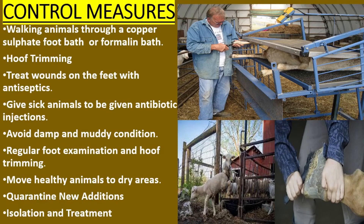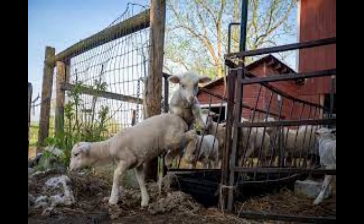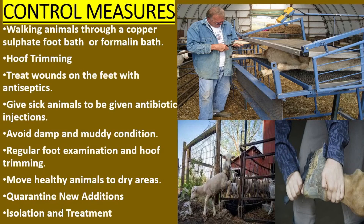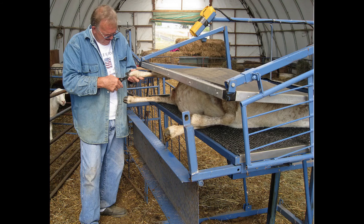Control measures: 1. Walking animals through a copper sulfate foot bath or formalin bath. 2. Hoof trimming. 3. Treat wounds on the feet with antiseptics. 4. Sick animals to be given antibiotic injections. 5. Avoid damp and muddy conditions. 6. Regular foot examination and hoof trimming.